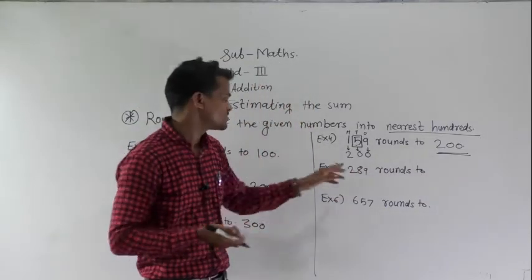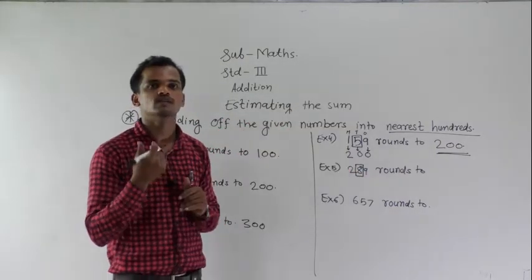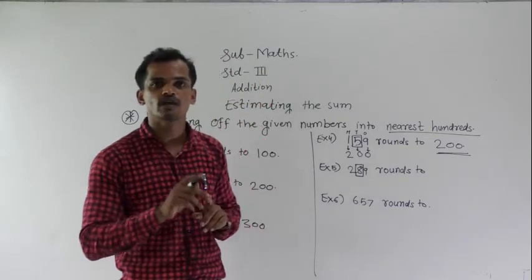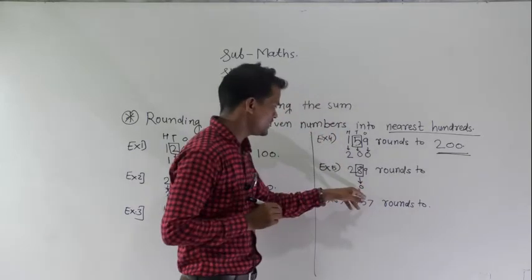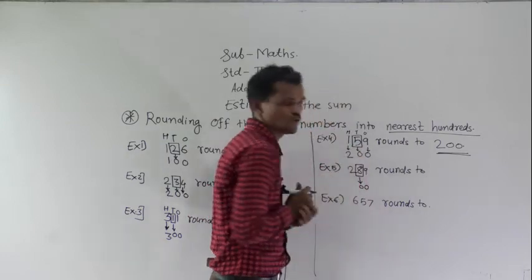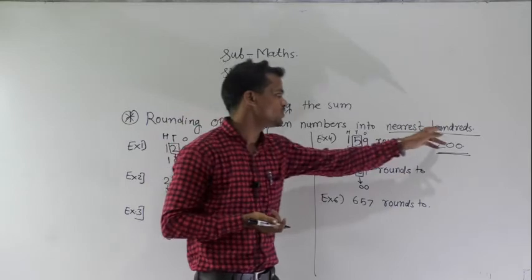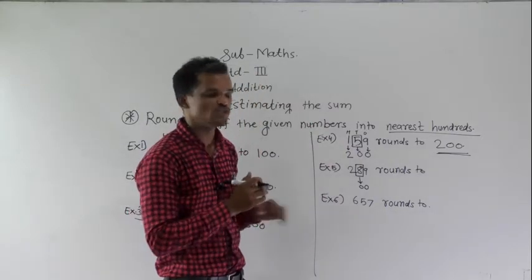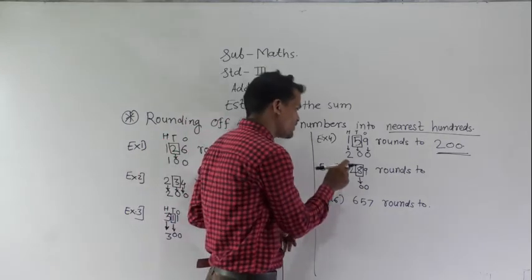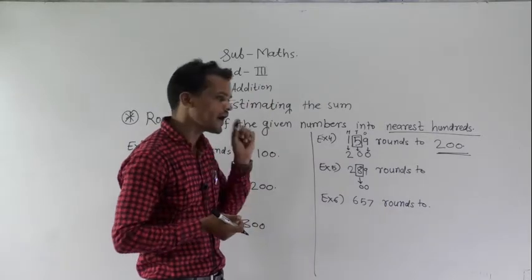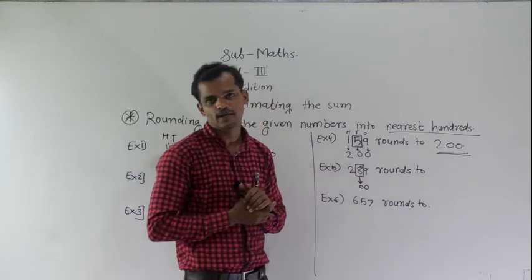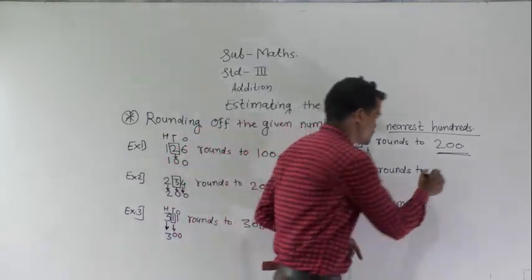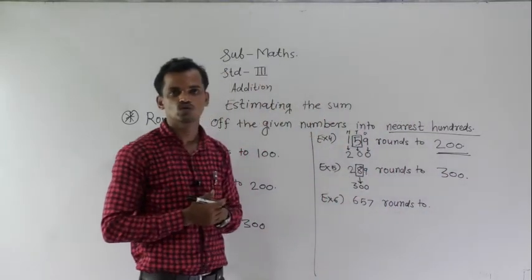289 rounds to nearest 100. See the tens place digit — 8 is there, which is greater than 5. Write 0 at the tens place and 0 at the ones place. Add 1 into the hundreds place digit: 2 plus 1 equals 3. So 289 rounds to 300.